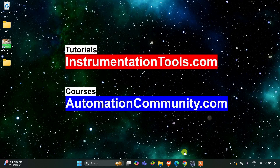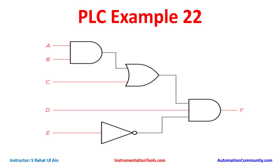Hello everyone, welcome to Automation Community. Today in this video we are going to develop ladder logic from a digital logic circuit. Let's look at the first example — Example 22. As you can see, there are five inputs: A, B, C, D, and E.